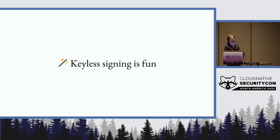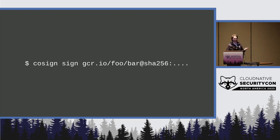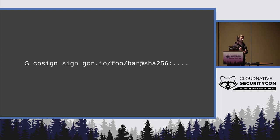The first bit about keyless signing being fun — it is. It's fantastically easy, especially if you've gone through the alternatives of signing any other way in the past. We'll see examples with Cosign, Sigstore's CLI client. Really all you need to do to sign a container is type 'cosign sign' and the digest of the container. The user experience after this is a browser will pop open prompting you to log in with an identity provider — Google, GitHub, Microsoft — which identity do you want to use? That identity gets attached to the signature.